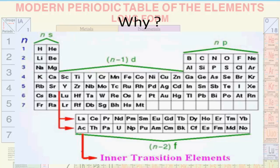Now let's understand why they are called inner transition elements. The definition is somewhat imprecise — some include lanthanum and actinium to give 15 elements in each series. From the perspective of electronic structure, the lanthanoids are characterized by the gradual filling of the 4f subshell, and the actinoids by filling the 5f subshell, so they are collectively called the f-block elements.